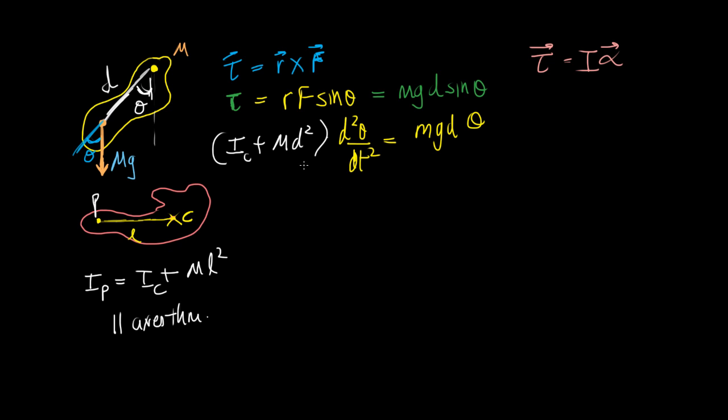So where do we get to this? If I bring this term down here then I get d2 theta by dt squared is equal to.